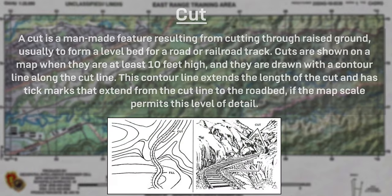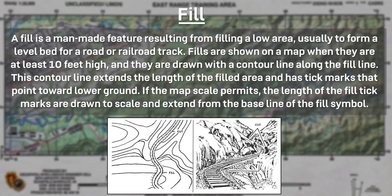There are two supplementary terrain features: cuts and fills. A cut is a man-made feature resulting from cutting through raised ground, usually to form a level bed for a road or railroad track. Cuts are shown on a map when they are at least 10 feet high, drawn with a contour line along the cut line with tick marks extending to the roadbed. A fill is a man-made feature resulting from filling a low area for a road or railroad. Fills are shown when at least 10 feet high, with a contour line along the fill line and tick marks pointing toward lower ground, drawn to scale when the map scale permits.